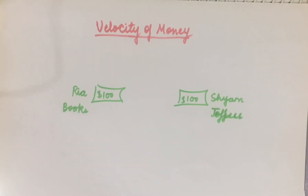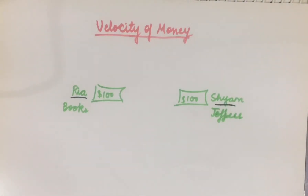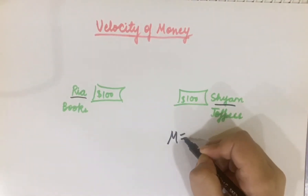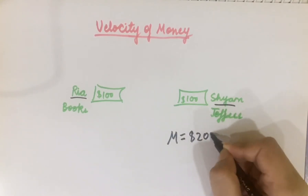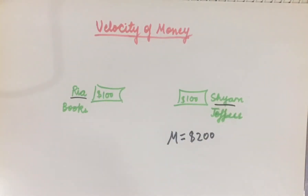Suppose that there are two individuals in the economy — one is Ria and one is Shyam. Both have $100 each. Ria sells books and Shyam sells toffees. So how much money is in this economy? The money in this economy is $200, because Ria has $100 and Shyam has $100.